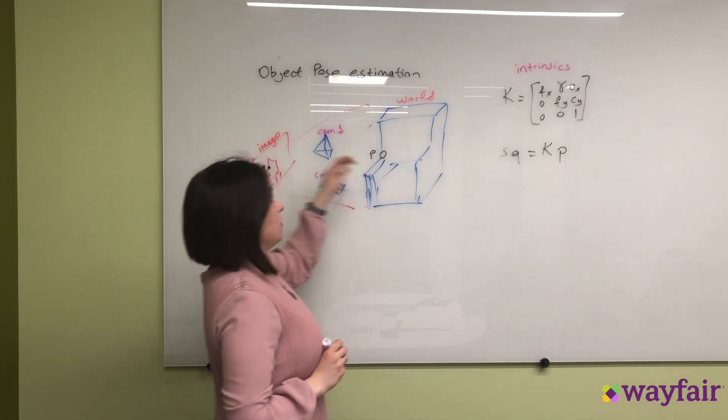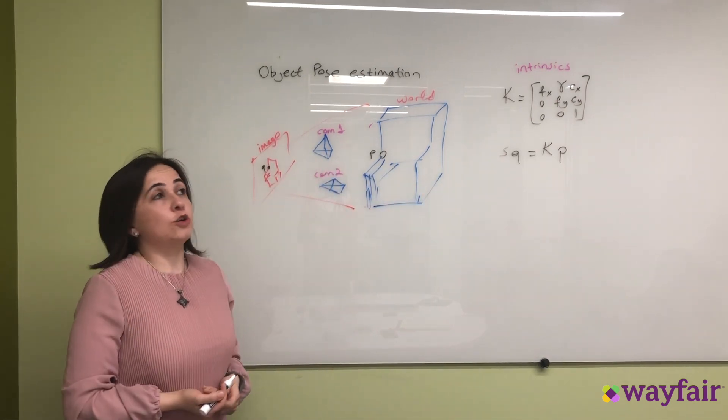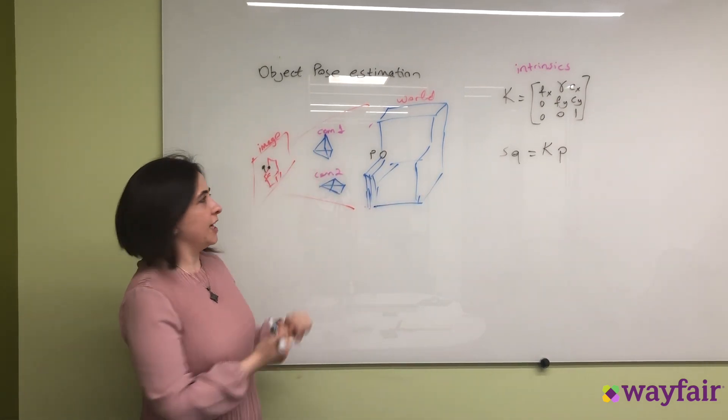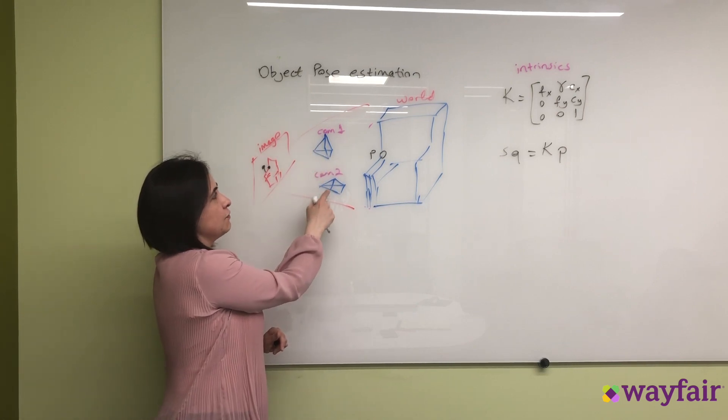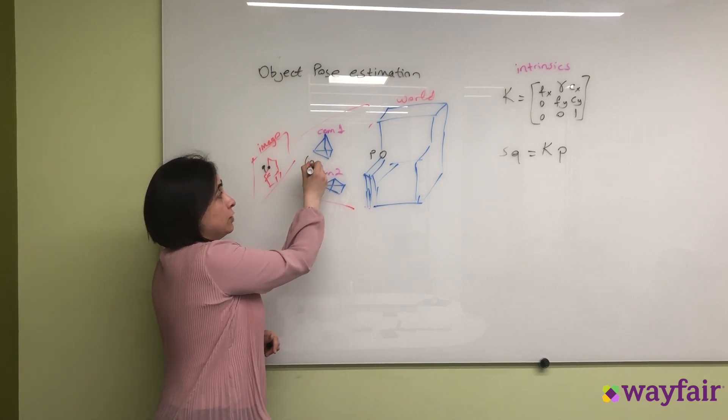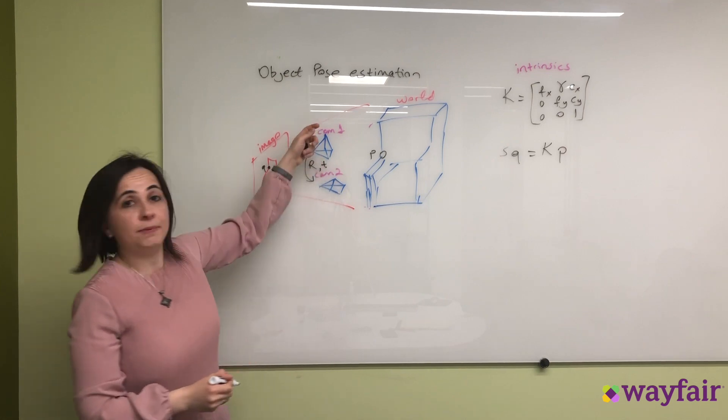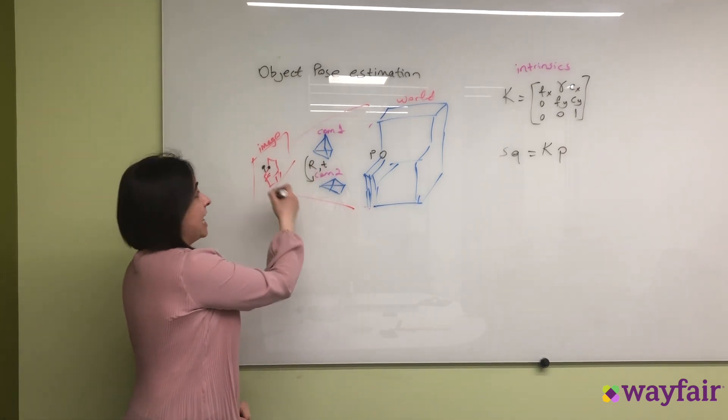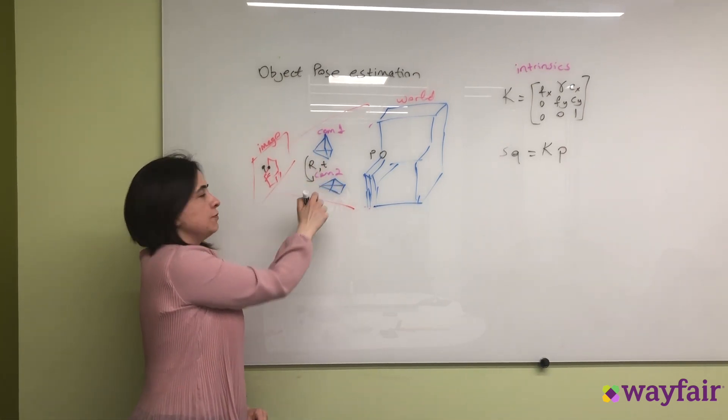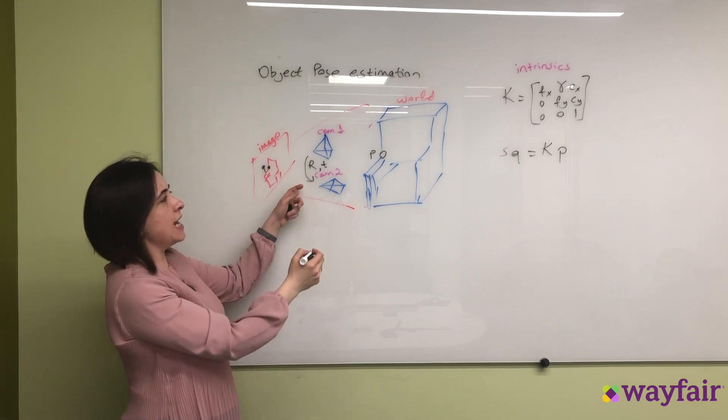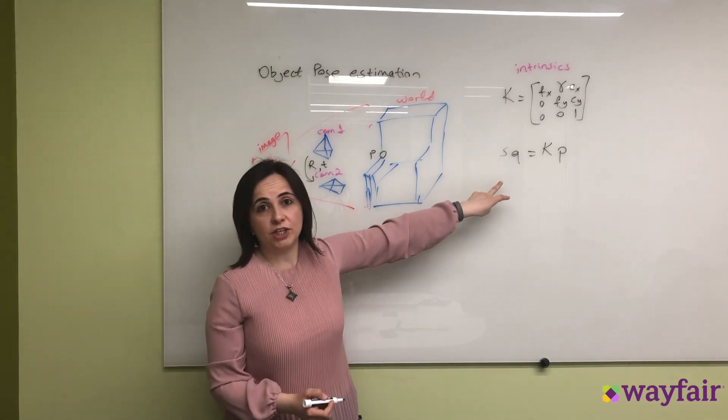This works for camera 1. Let's say our robot moved to another location, so it's taking another image from camera 2. There is a rotation and translation happening between these two cameras. For that image, we need to change this equation accordingly.